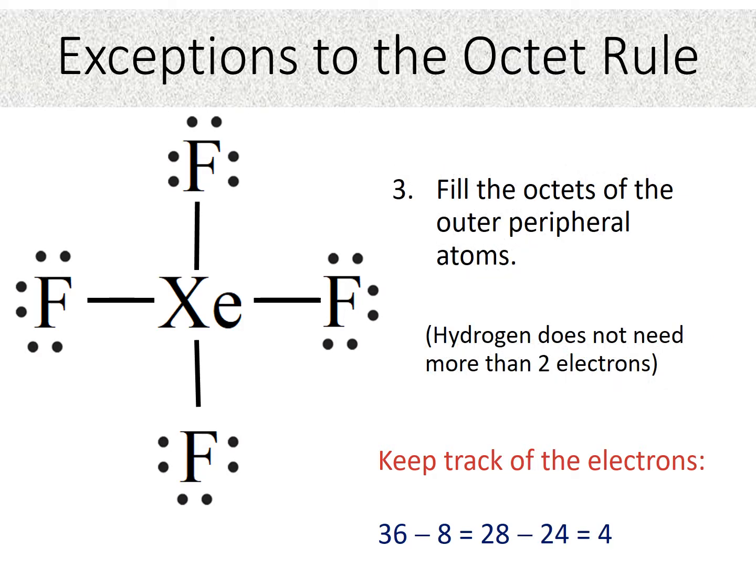So step three is the peripheral atoms. We must complete the octets on the peripheral atoms. Remember, hydrogen only needs two. So in this case, each fluorine has two bonding electrons. So we need to put six more around each fluorine for a total of eight electrons around each fluorine. So how many dots did we just put in? Remember, we're putting them in pairs. So how many dots did we use? Well, as you can see, we used 24 of these electrons for the peripheral atoms. So we would subtract out 24. That gives us four electrons left over.